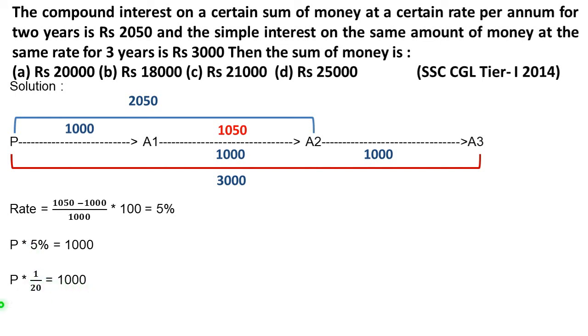You can also calculate the principle using the formula. SI = PRT/100. You can put it in the formula to find principal, because we have simple interest for 3 years which is Rs 3000.